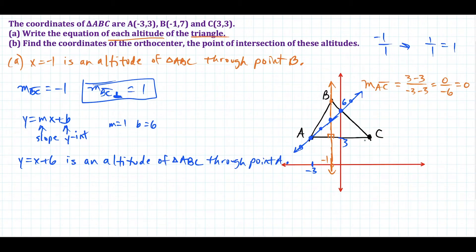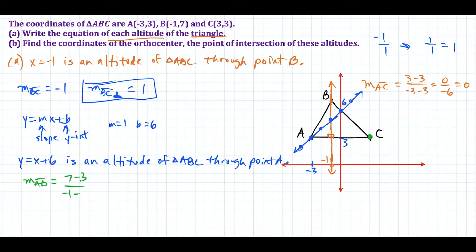Now we need to find the altitude going through point C. We look at the opposite side, AB. The slope of AB looks like positive 2, since we're going up 2 over 1. To be 100% precise, we find the slope of segment AB: the difference of the y values is 7 minus 3, divided by negative 1 minus negative 3. That gives us 4 over 2, which equals 2. So the slope of AB is in fact positive 2.